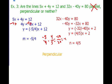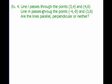I'm going to leave you with a try-it problem. Line L passes through the points (3, 4) and (4, 6). Line M passes through the points (negative 4, negative 8) and (3, 6). Are the lines parallel, perpendicular, or neither? As a hint, your first step should be to find the slope of each line, and then use that information to tell me parallel, perpendicular, or neither.